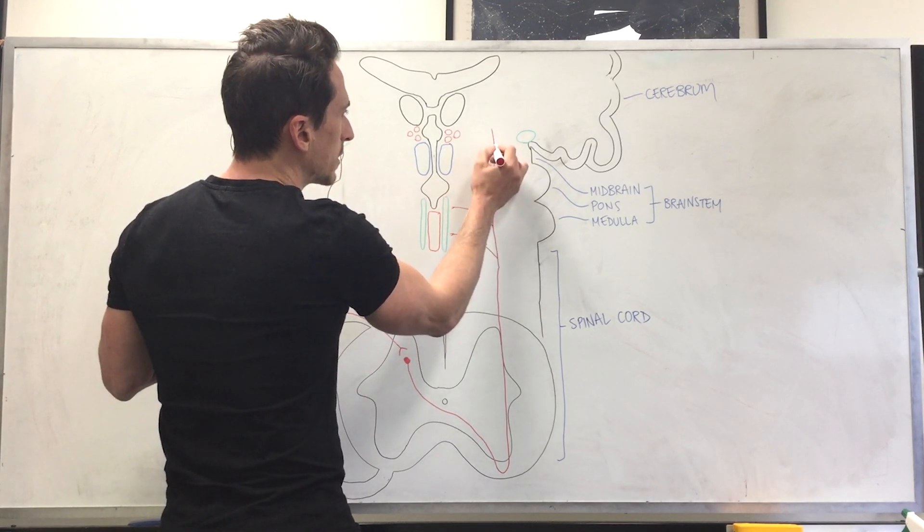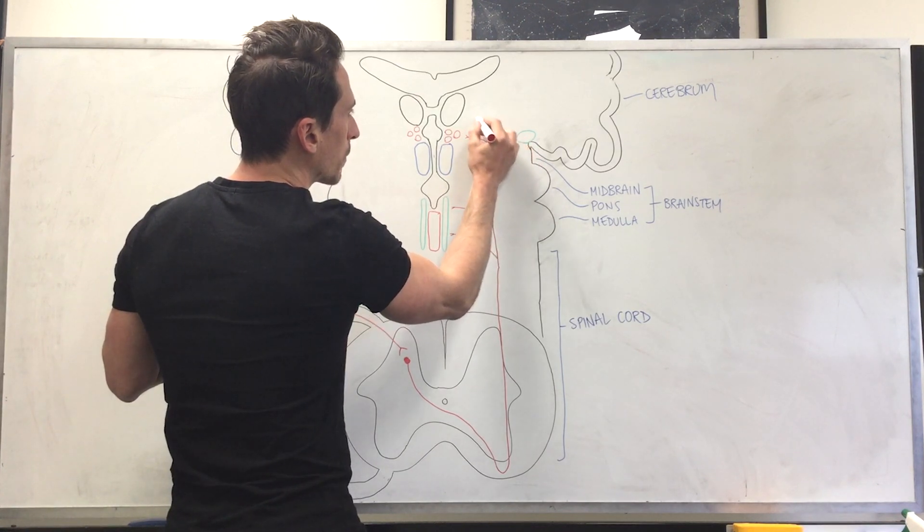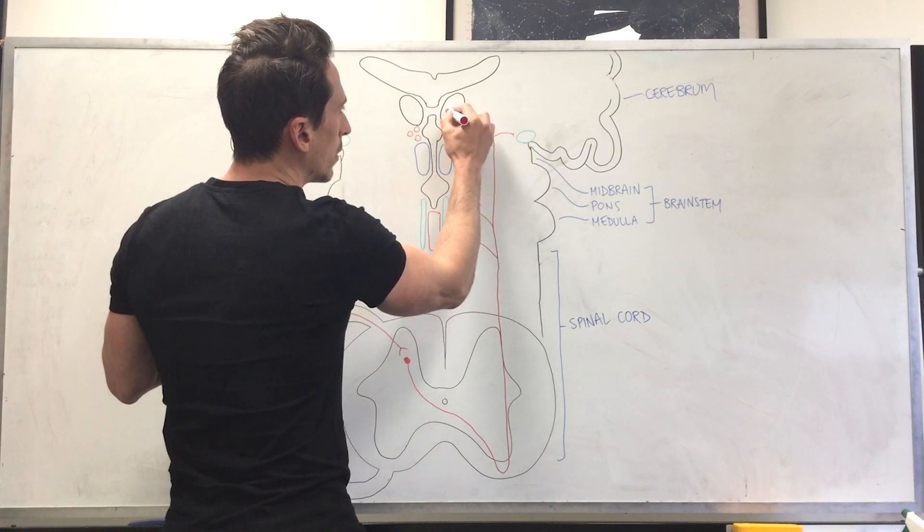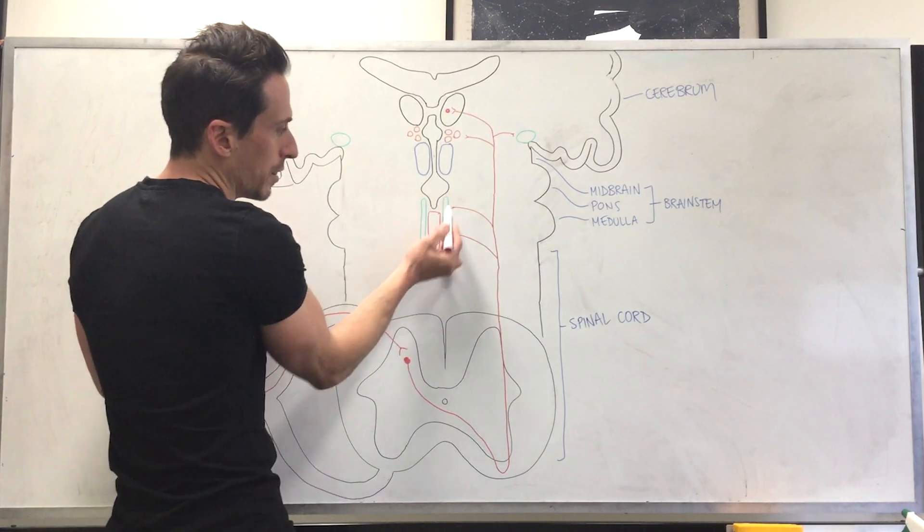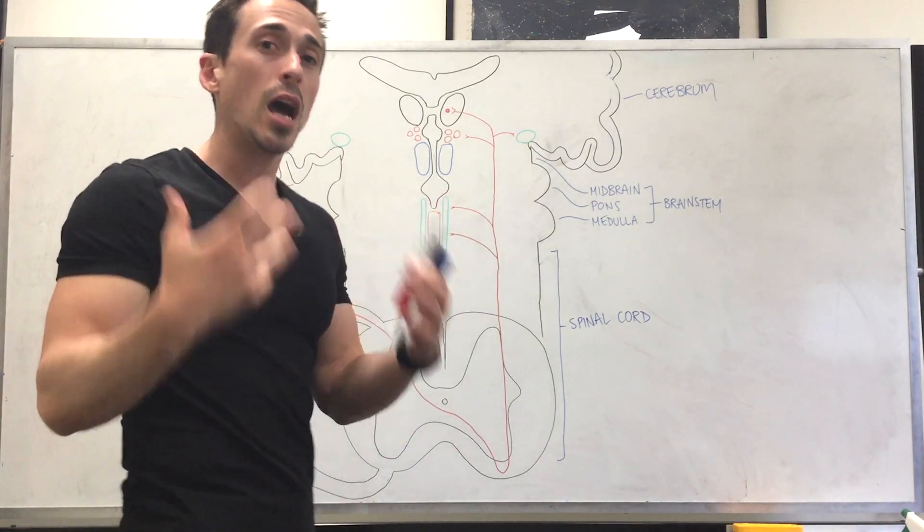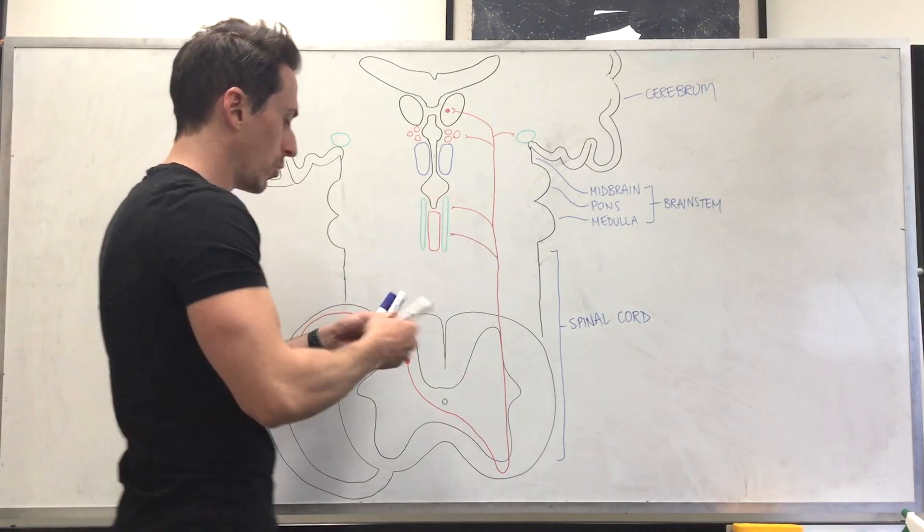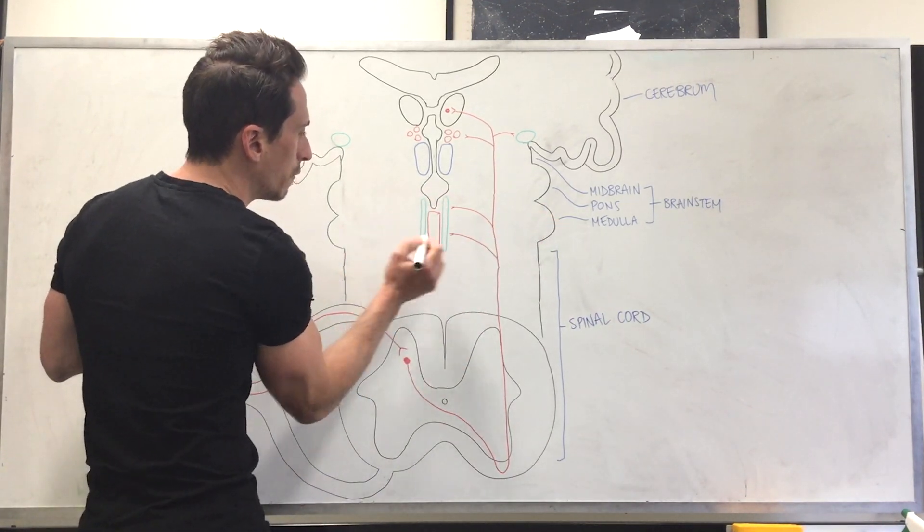Now these areas that it sends afferents to include, now it includes this little area here, which we call this entire area here, is composed of nearly a hundred different nuclei, or cell bodies, and that is called the reticular formation.